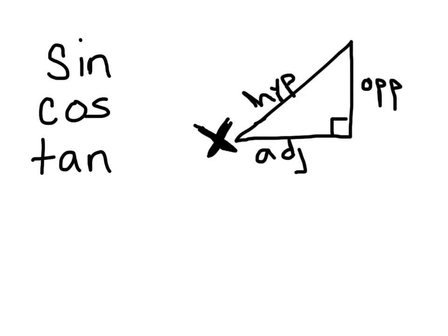Again, we're finding the sine of X, the cos of X, the tan of X. And to find all of these, we just need to know the following. The sine is equal to the opposite over the hypotenuse.